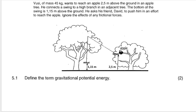Our question says Vusi, of mass 45 kilograms, wants to reach an apple 2.5 meters above the ground. The height above ground is 2.5 meters. He connects a swing to a high branch in an adjacent tree. The bottom of the swing is 1.15 meters above the ground. He asked his friend Dave to push him in an effort to reach the apple, and we ignore friction.